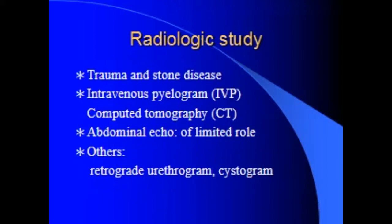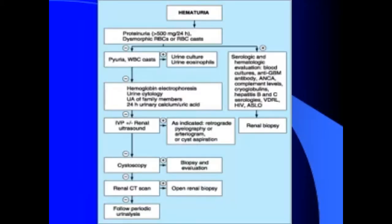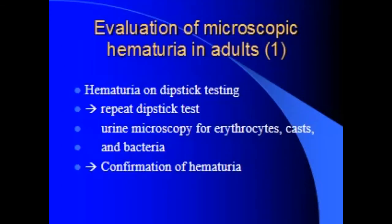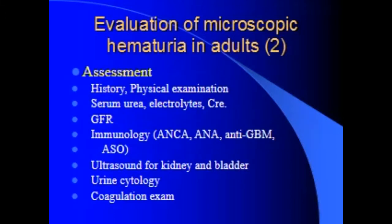Total hematuria suggests bladder, ureter, or kidney origin. Terminal hematuria suggests bladder neck or prostatic urethra. Associated symptoms: fever, chills, other bleeding points, dyspnea. Recent painless gross hematuria should raise consideration for tumor.